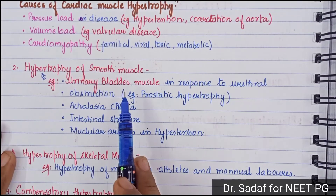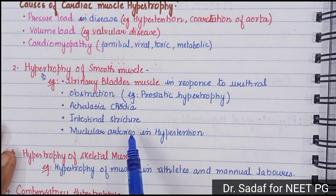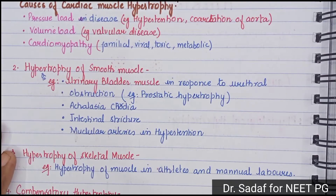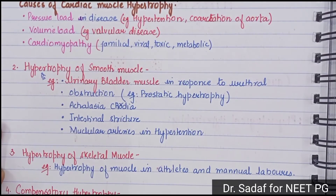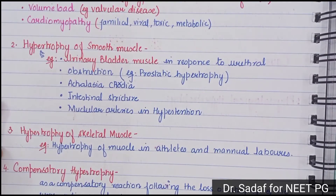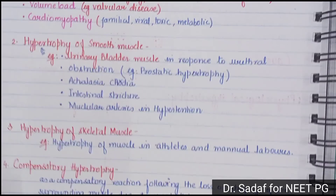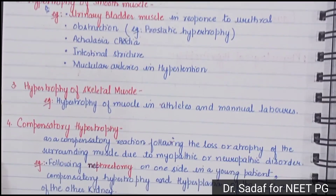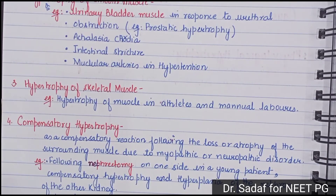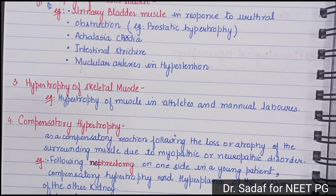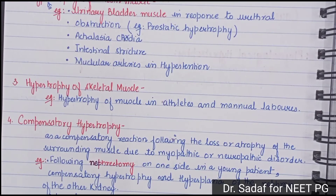Smooth muscle hypertrophy can also be seen in achalasia cardia, intestinal stricture, and muscular arteries in hypertension. It can also be seen in skeletal muscle — for example, hypertrophy of skeletal muscle. This is called compensatory hypertrophy, which occurs as a compensatory reaction following the loss and atrophy of surrounding muscle due to myopathic or neuropathic disorders.